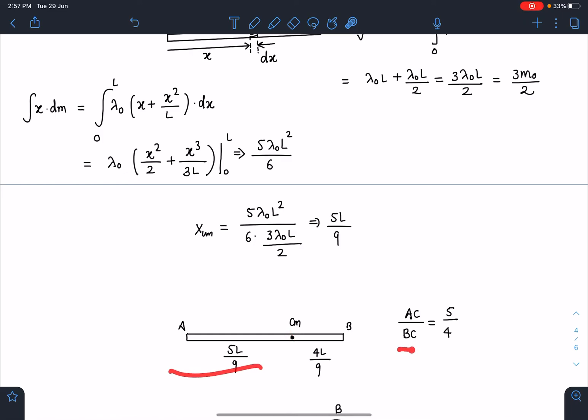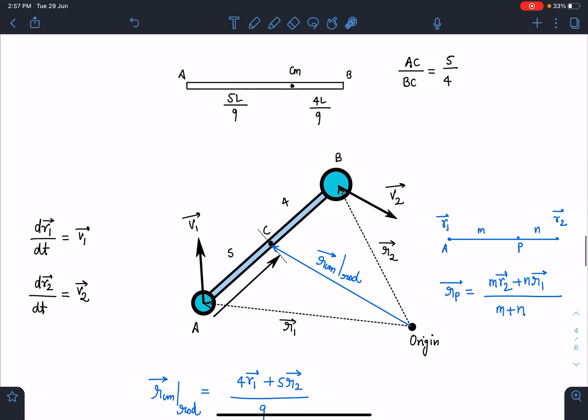This AC by BC is 5 by 4, or you can say center of mass is dividing this line segment into 5 to 4 ratio. If that is the case, let's say position vector of A is R1 and position vector of B is R2 at any given instant of time. I can simply write dr1 by dt as V1 and dr2 by dt as V2. Also, I know that this line segment for the rod is divided by the center of mass into 5 to 4 ratio.